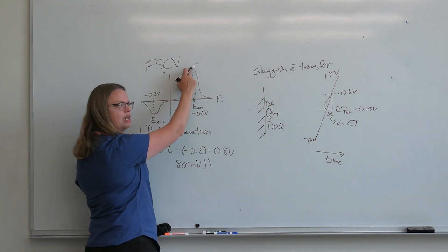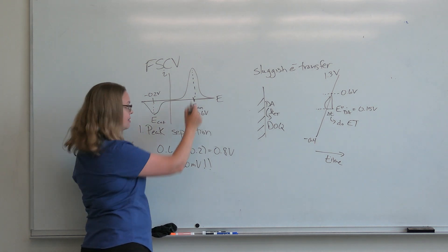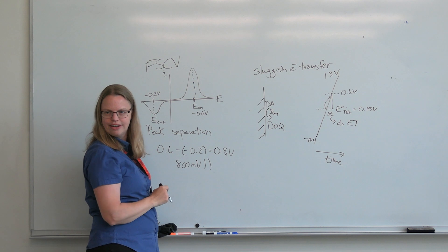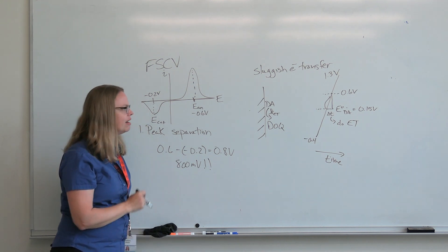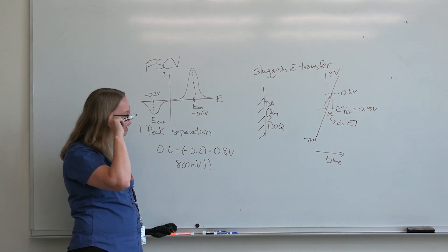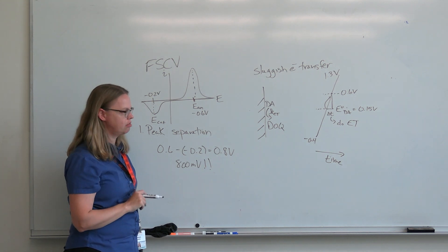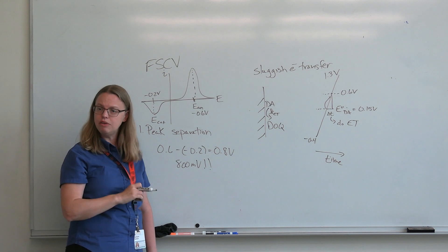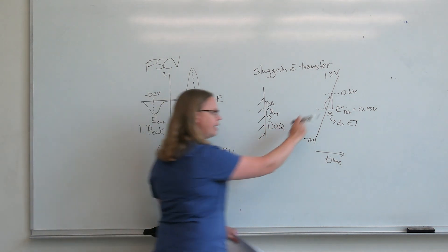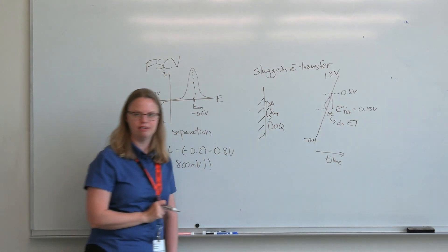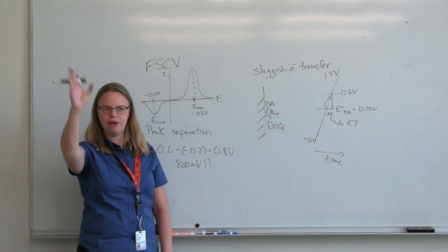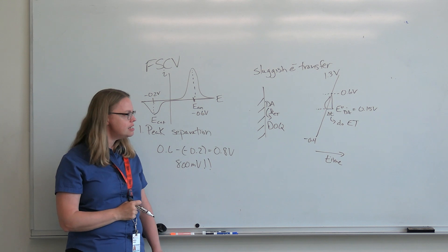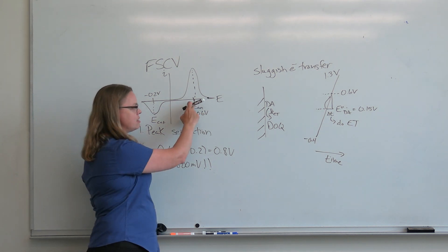That's the main peak — some electron transfer happened a little earlier and some a little later, but there's a time it takes to do that actual electron transfer. So it appears that you're at a higher voltage; it's not that you needed that higher voltage. If you got there and held, you would do the reaction, but you didn't hold — you kept going at a screaming fast rate, and so that pushes the peak position out.